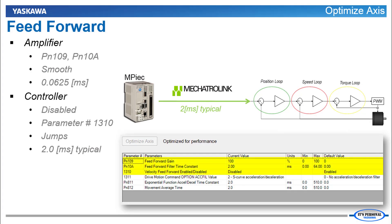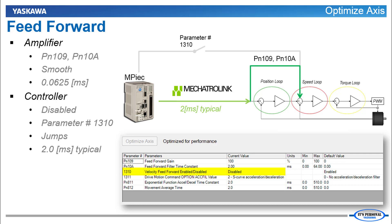The top three parameters in this list all relate to velocity feedforward. Feedforward takes the speed of the position command as an input to the speed loop and results in reduced position error. The amplifier internal feedforward gain and filter result in a smooth response because they operate at the internal update rate of the amplifier. The controller feedforward operates at the Mechatrolink cycle, typically around 2ms.